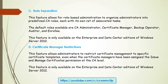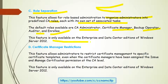The next feature is role separation. This feature allows for role-based administration to organize administrators into predefined Certificate Authority roles, each with its own set of associated tasks. You can assign certain tasks to certain administrators or users. The default roles available are: Administrator, Certificate Manager, Backup Operators, Auditors, and Enrollee. This feature is only available on the Enterprise and Datacenter editions of Windows Server 2012 or 2008.